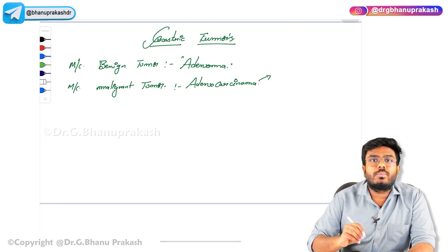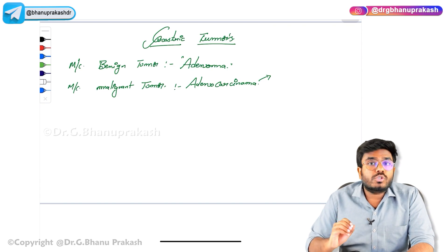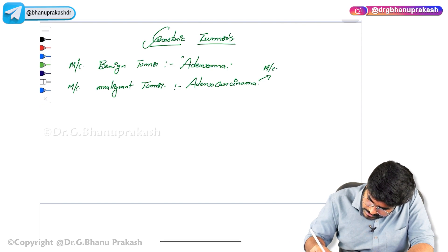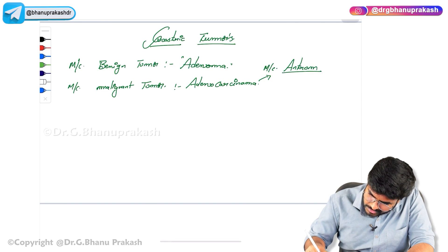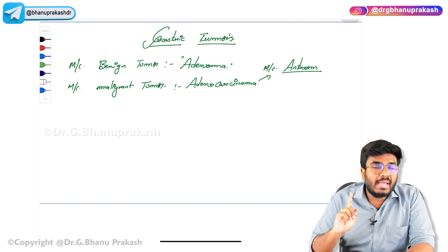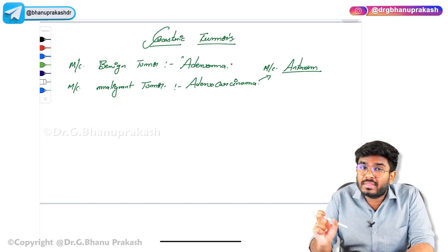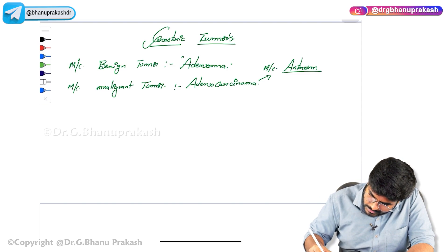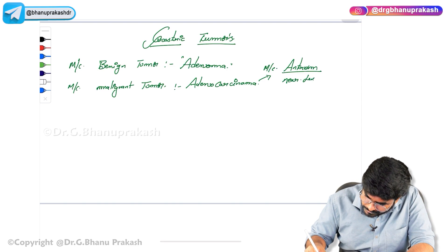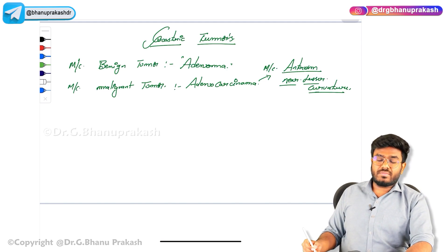What is the most common site of adenocarcinoma? In the stomach, where is the most common site? The most common site is the antrum. Antrum is also the most common site of gastric peptic ulcer disease. The antrum region near the lesser curvature is the most common site of gastric adenocarcinoma.